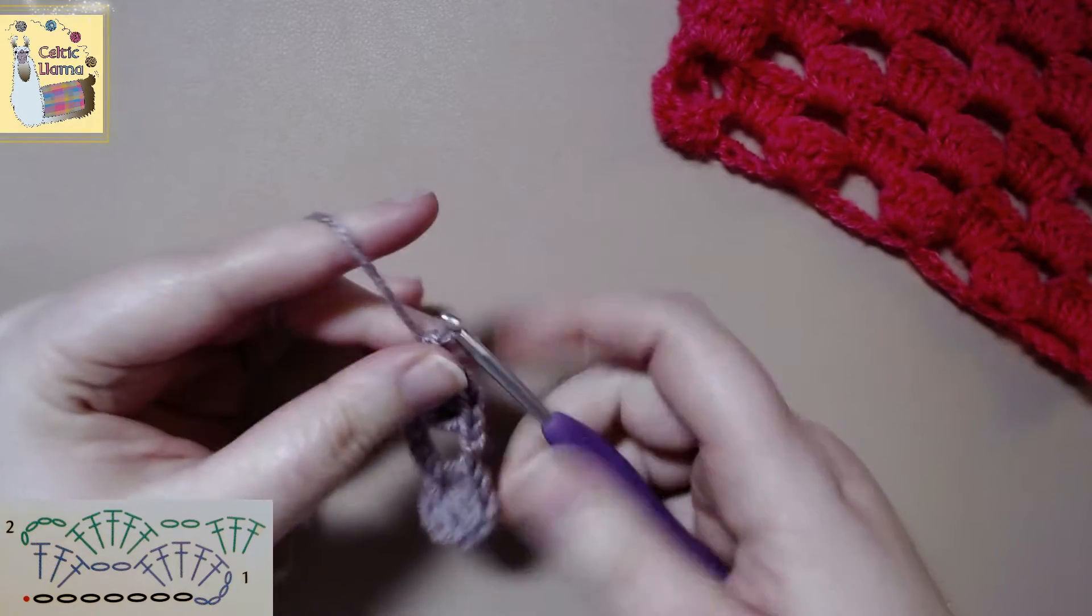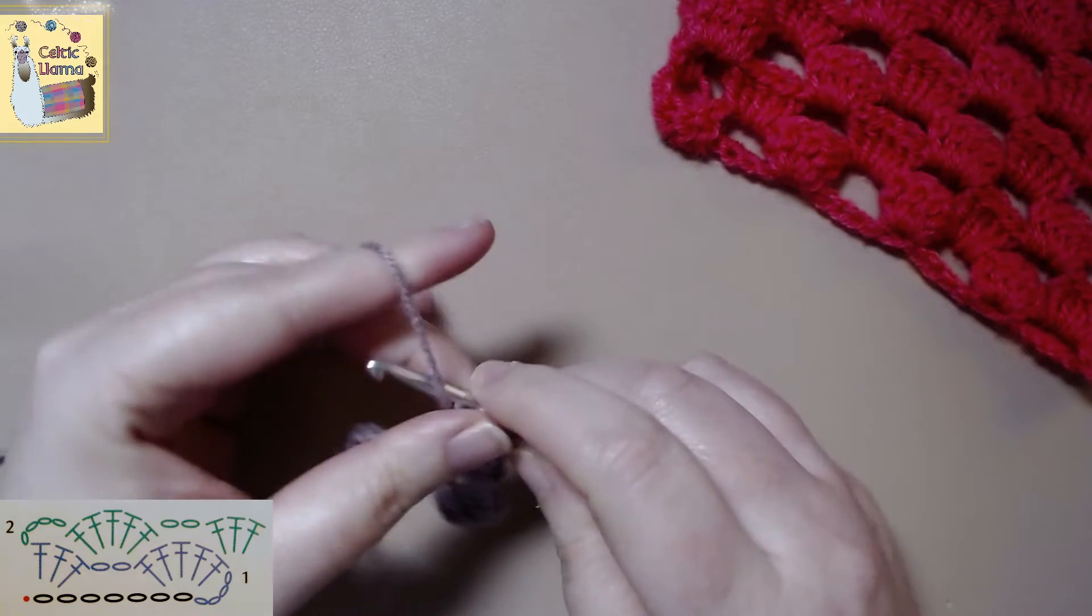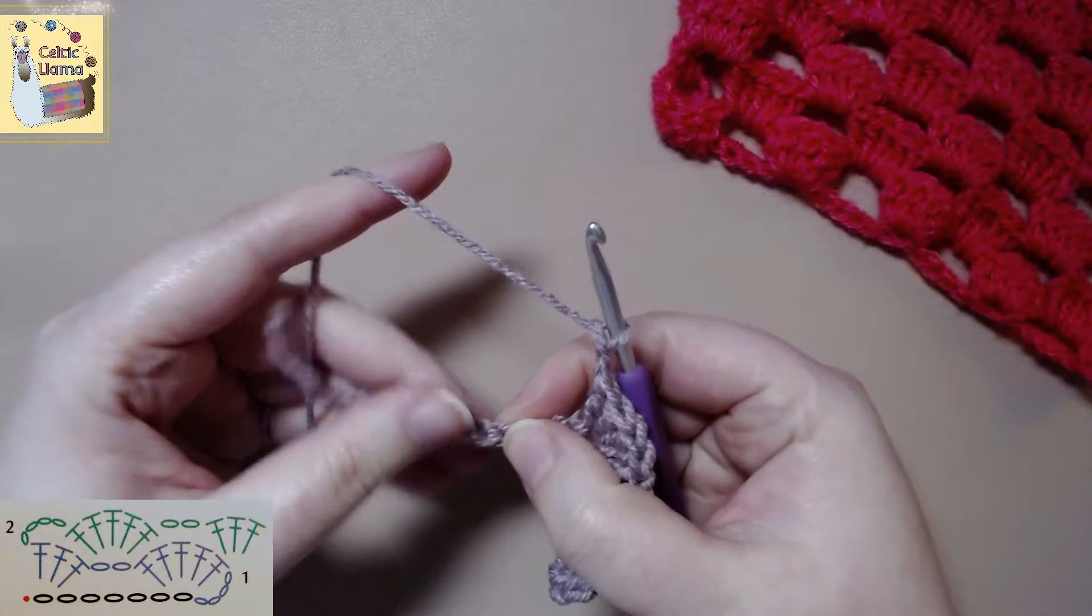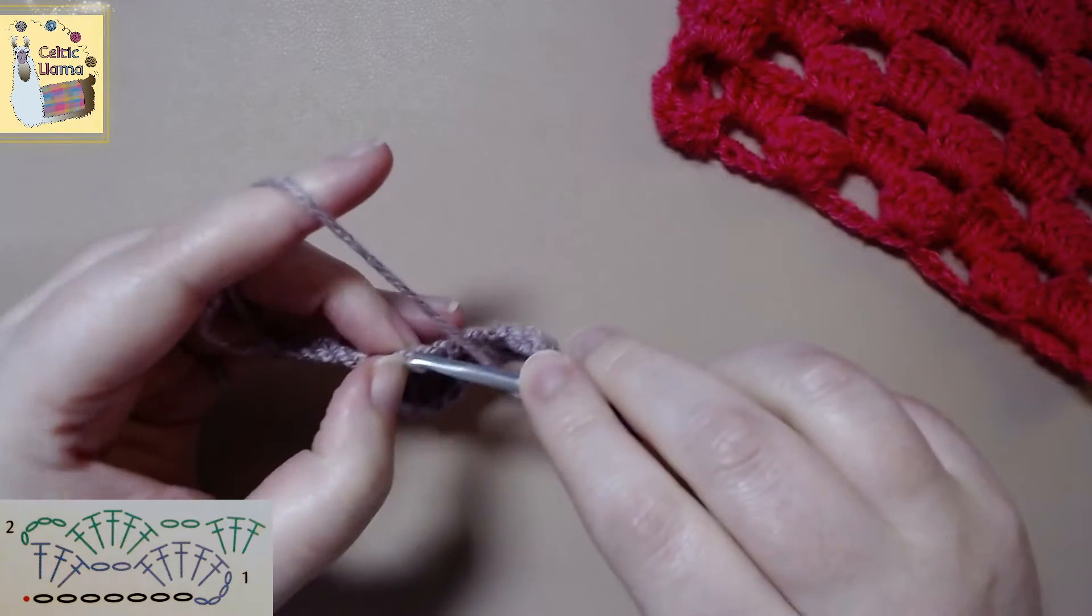Again we're going to chain two, skip five, and in the sixth chain work five double crochets.